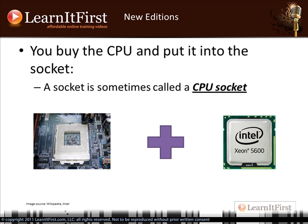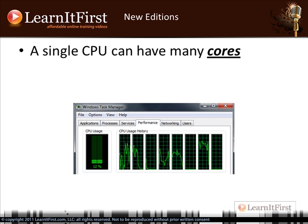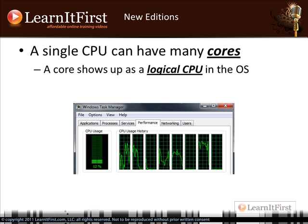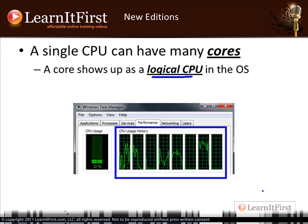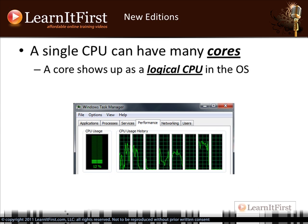Sometimes it's called a CPU socket. Now, a single CPU can have many cores. So we buy that one Xeon 5600 series CPU, but it might actually be an 8-core CPU. When we install it, the operating system shows it as logical CPUs — it shows up as an 8-way system. If you go to Task Manager, as you can see in this screenshot, it shows 8 CPUs. So that's a core — a CPU can have many cores.